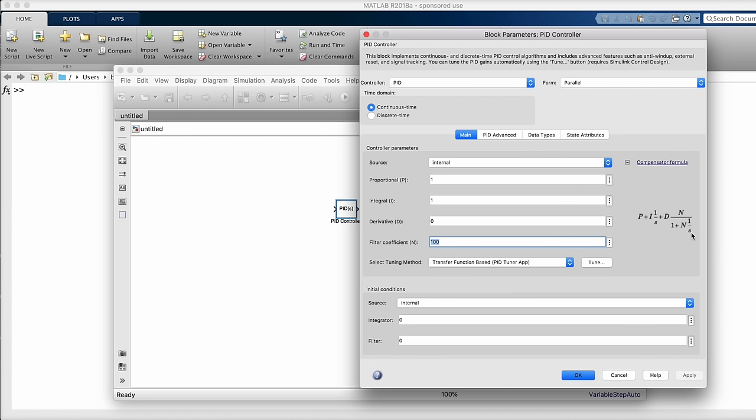So, hopefully this cleared up any confusion you might have about why the derivative path is not just a pure derivative, and it gives you a better insight into what the filter coefficient is and how it protects your system from high frequency noise.